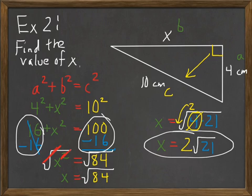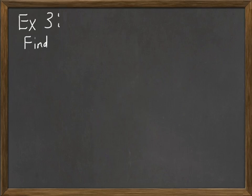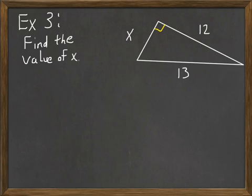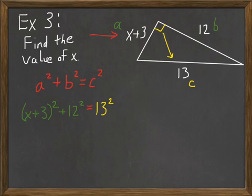Let's look at one final example. In example 3, we're again going to find the value of X, but now we have this issue of having an expression X plus 3 on one of the sides. How am I going to handle that? We're still going to use Pythagorean theorem. By now you can probably figure out which side is A, B, and C. I'm going to plug those values in. I have X plus 3 squared. Notice I put parentheses around the X plus 3. That's because the entire side has to be squared. Plus 12 squared equals 13 squared.